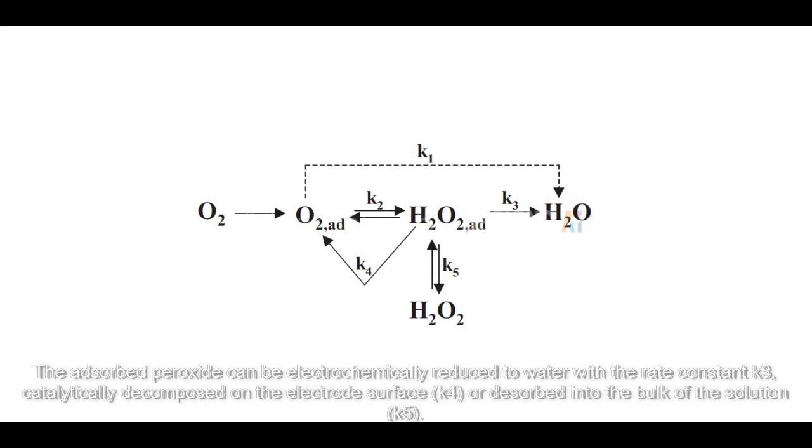The adsorbed peroxide can be electrochemically reduced to water with the rate constant K3, catalytically decomposed on the electrode surface with K4, or desorbed into the bulk of the solution with K5.